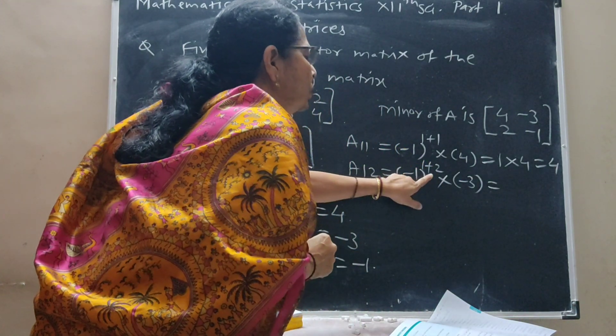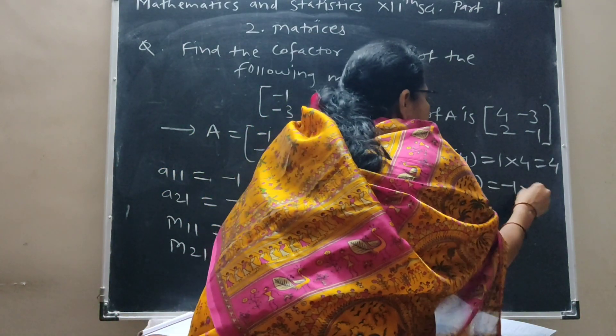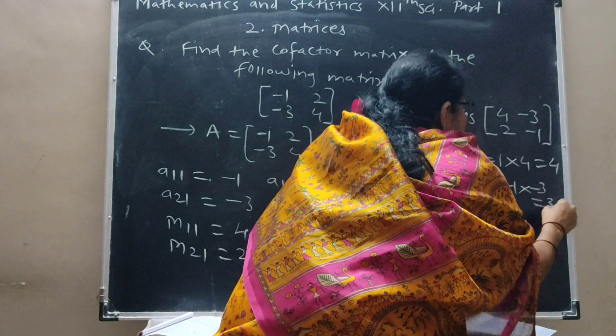Minus 1 raised to an odd power gives minus 1, then minus 1 times minus 2 equals 2. Finally this is 2.